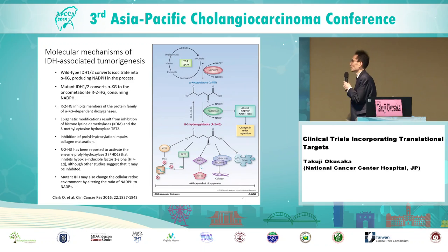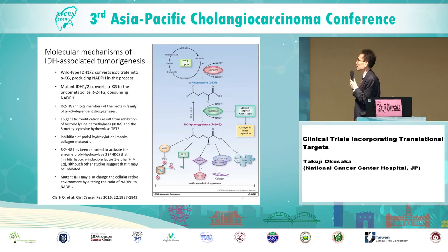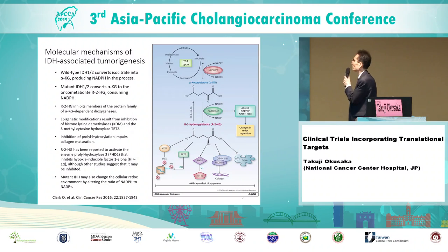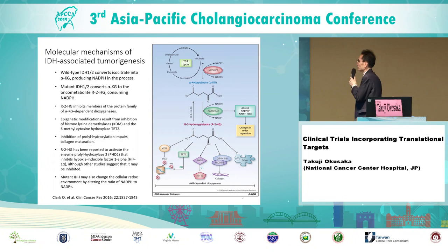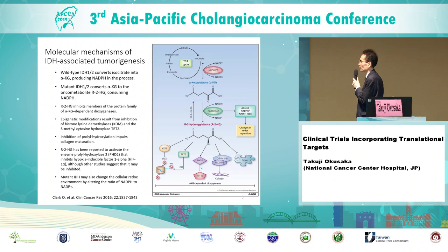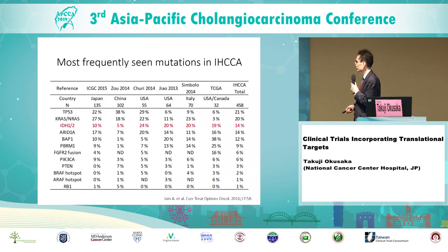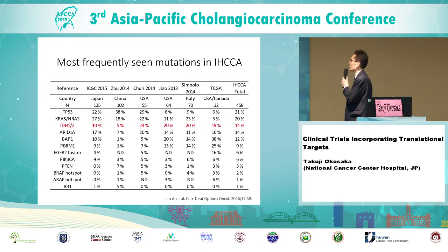IDH1 converts alpha-KG to the oncometabolite alpha-2-HG, consuming NADPH. This metabolite stimulates several pathways which induce carcinogenesis in several organs, including the biliary tract. IDH1/2 mutation is found in around 5% to 20% of intrahepatic cholangiocarcinoma.